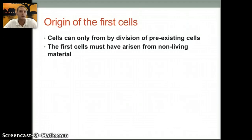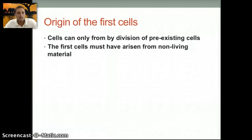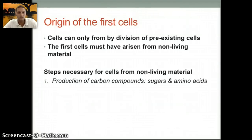Cells can only come from pre-existing cells by cell division, but that begs the question: how did the first cells arise from non-living material? In asking this question, there are a number of steps that must have been necessary for cells to come from non-living material. The first would be the production of carbon compounds, specifically sugars and amino acids — the formation of organic material that could be the building blocks for life.